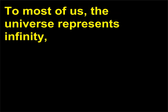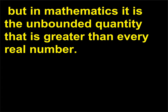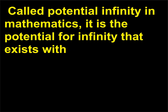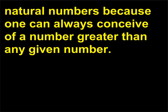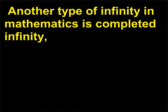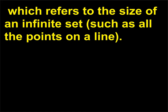To most of us, the universe represents infinity. But in mathematics it is the unbounded quantity that is greater than every real number. Called potential infinity in mathematics, it is the potential for infinity that exists with natural numbers because one can always conceive of a number greater than any given number. Another type of infinity in mathematics is completed infinity, which refers to the size of an infinite set, such as all the points on a line.